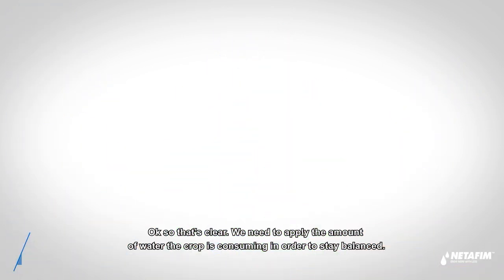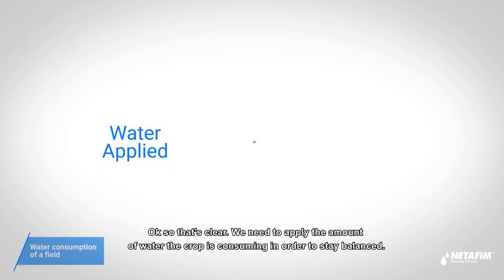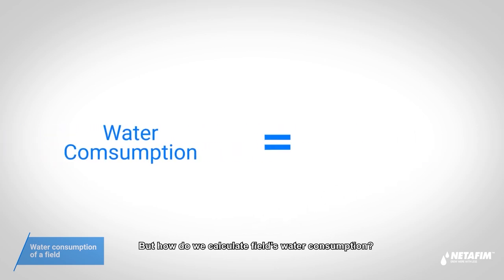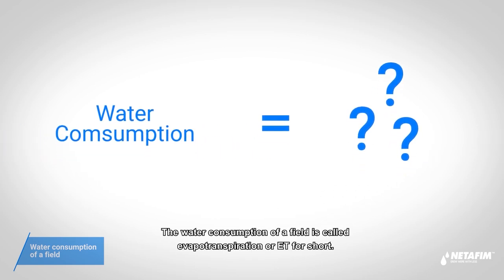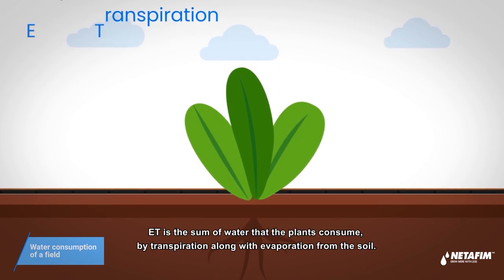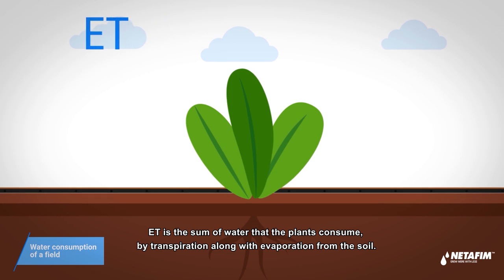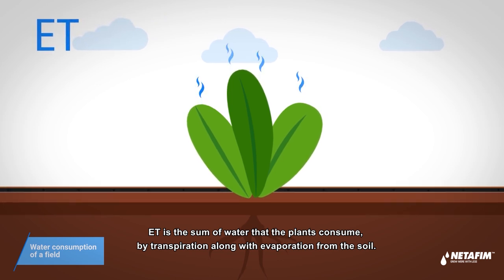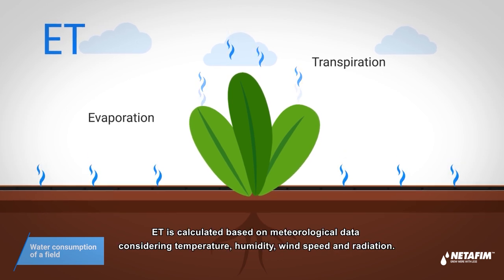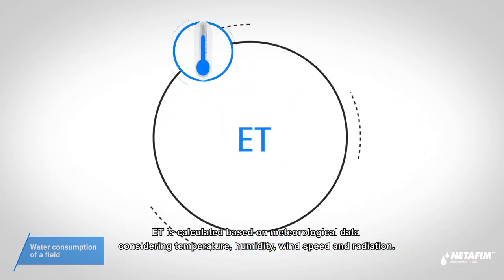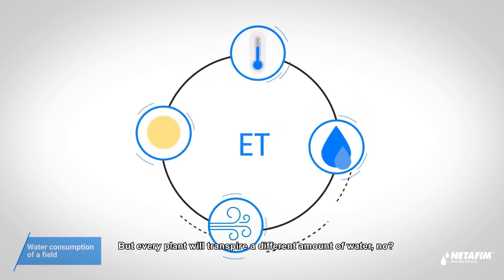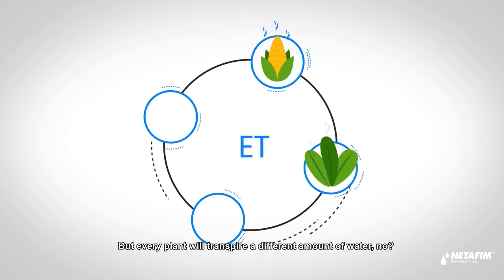We need to apply the amount of water the crop is consuming in order to stay balanced. But how do we calculate a field's water consumption? The water consumption of a field is called evapotranspiration, or ET for short. ET is the sum of water that the plants consume by transpiration along with evaporation from the soil. ET is calculated based on meteorological data, considering temperature, humidity, wind speed, and radiation.